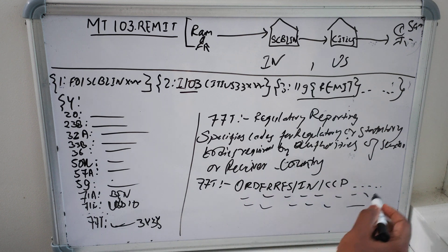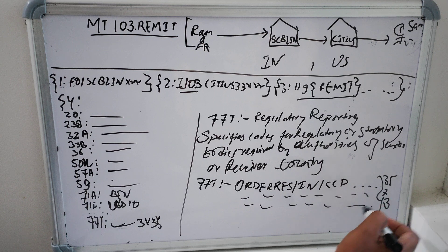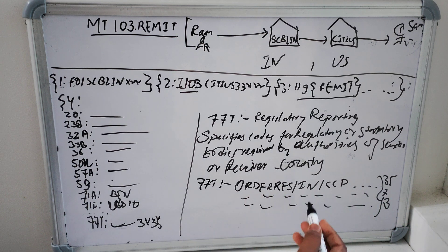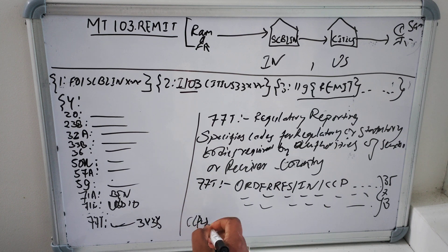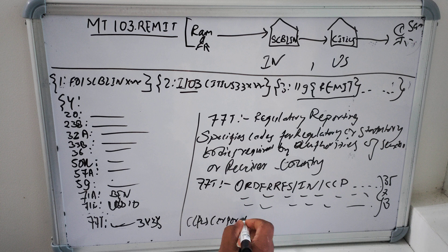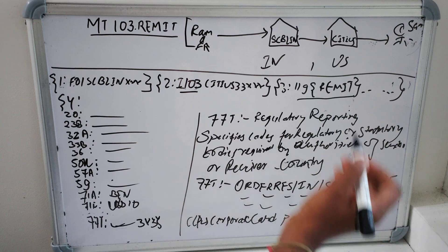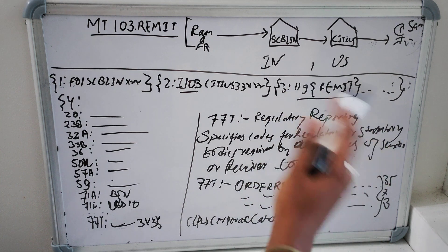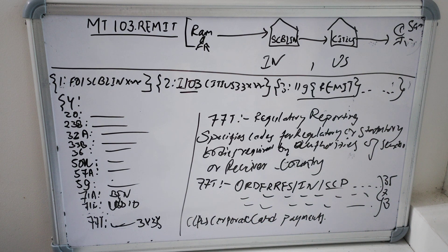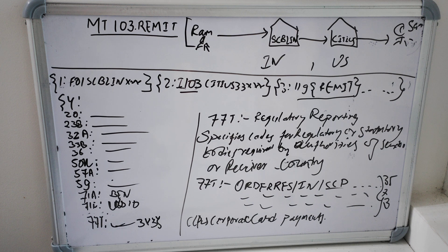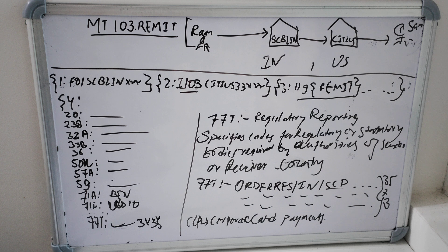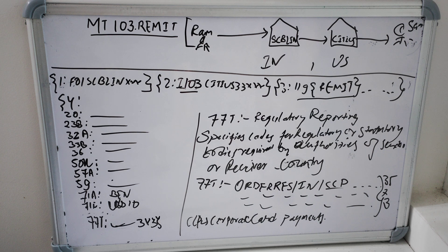So basically it is 35 into 3. So now for example CCP is nothing but it is defined as a corporate card payments. So if it is used CCP and then if it has to be sent to the regulatory bodies, then they will identify with these tags and then necessary reconciliation would be done at bank level and the respective system level.